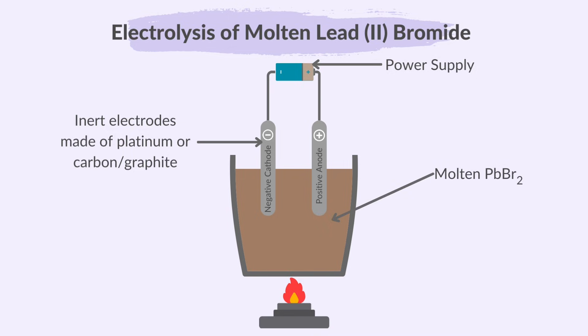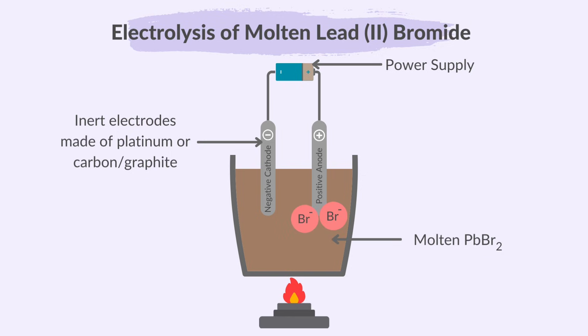The chemical formula for lead-2 bromide is PbBr2. So the ions present are Pb2+ and Br1-. Bromide ions with a negative charge will be attracted to the positive electrode, the anode. Lead ions carrying a positive charge will travel towards the negative electrode, the cathode.